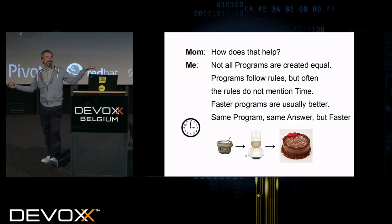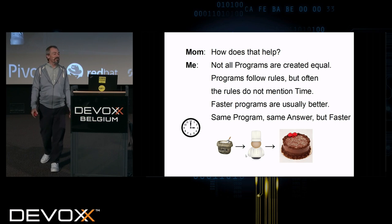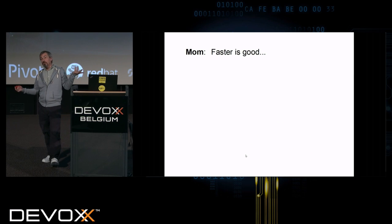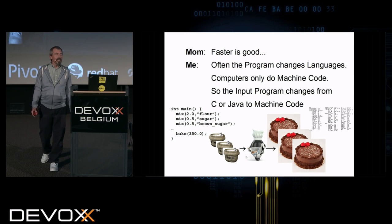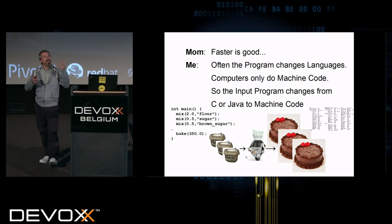How does that help? Well, not all programs are created equal. Programs follow rules. But often the rules do not mention time. Faster programs are usually better. Same program, same answer, but faster. Faster is good. Often the program changes languages. Computers only do machine code. So I have my C or my Java on the left and my machine code on the right.